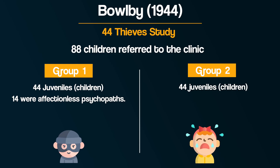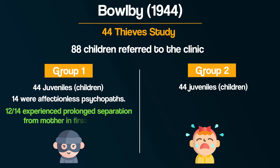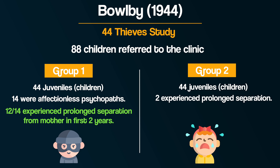Of these 14, 12 of them had something in common: they had all experienced prolonged separation from their mothers in their first two years of life. In contrast, only two of the 44 children in the control group had experienced prolonged separation, and none of them were affectionless psychopaths.